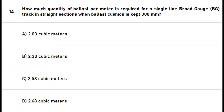Question 14: How much quantity of ballast per meter is required for a single-line broad gauge (BG) track in straight sections when ballast cushion is kept 300 millimeters? A. 2.03 cubic meters. B. 2.30 cubic meters. C. 2.58 cubic meters. D. 2.68 cubic meters. The right answer is option B: 2.30 cubic meters.